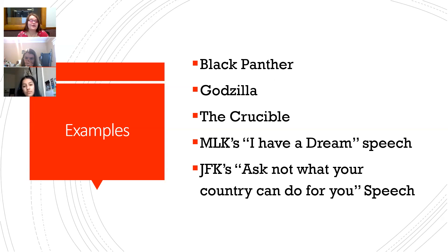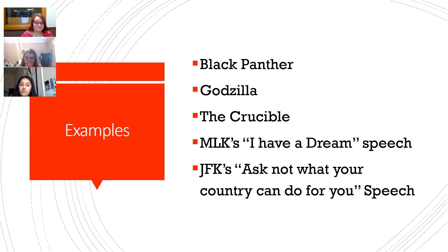The Crucible is a play you may or may not have read in high school. It takes place during the Salem Witch Trials, but it was written in the 1950s in response to something called The Red Scare. The Red Scare was this fear of communism after World War II, and people accused of being communists were often blacklisted, meaning they were kept from being able to work. Arthur Miller, who was blacklisted because he was accused of being a communist, wrote this play. The social context is that it's about mass hysteria, lying, and falsely accusing people who are innocent.